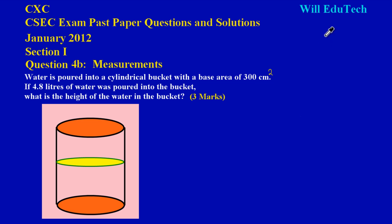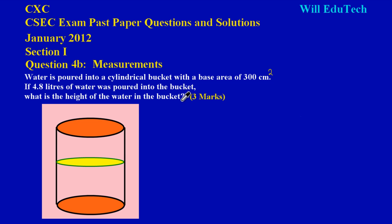Welcome back to Will EduTech. In this video we're going to be looking at the solution for question 4b on the CSEC math exam past paper for January 2012. The question states: water is poured into a cylindrical bucket with a base area of 300 centimeters squared. If 4.8 liters of water was poured into the bucket, what is the height of the water in the bucket?